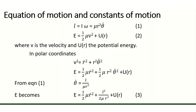U of r is the actual potential energy. If we club this centrifugal potential energy with the actual potential energy, we get a new term called effective potential energy, denoted by U_eff of r.